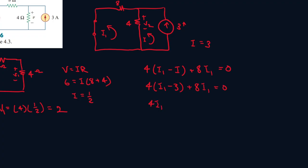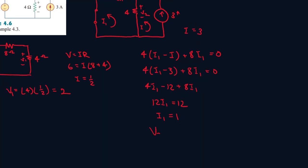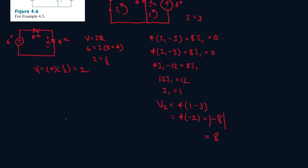And then foil everything in. Divide both sides with 12. I1 is 12. Now we can find V2. V2 is 4, I1, which was 1. So it's minus 3. So it's minus 8. Take the absolute value of it.